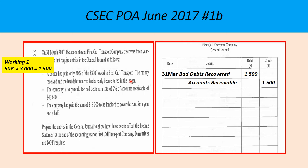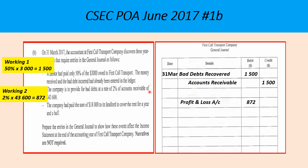The next item: the company is to provide for bad debts at the rate of two percent of accounts receivable of $43,600. The working: 2% × $43,600 = $872. We come to the general journal and write it in — we debit profit and loss account with $872 and credit provision for bad debts with $872.